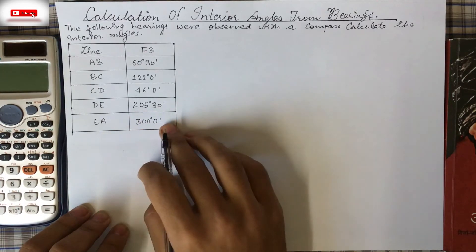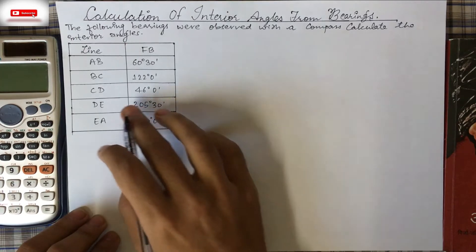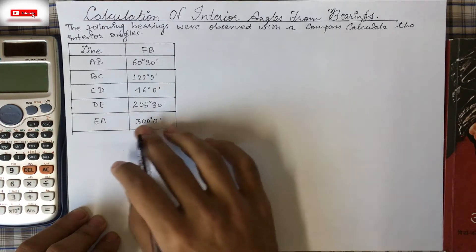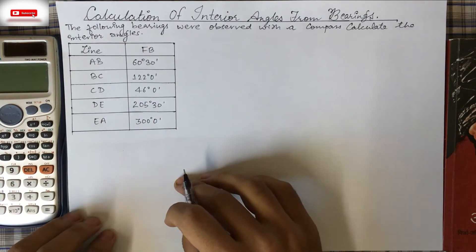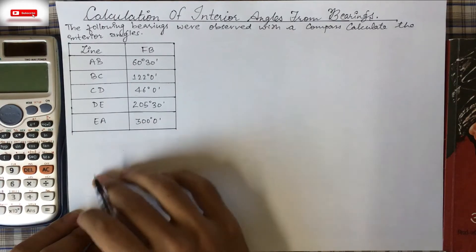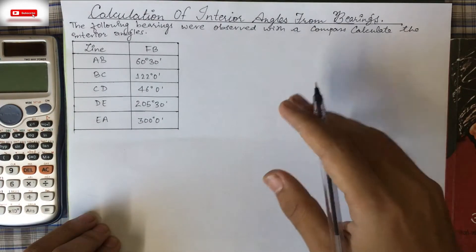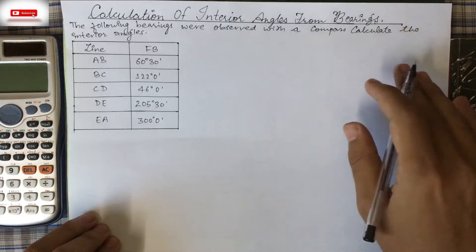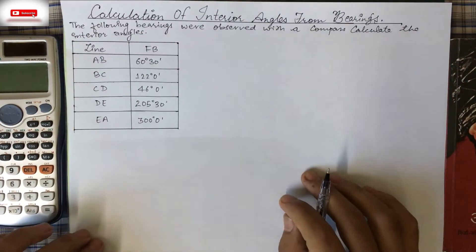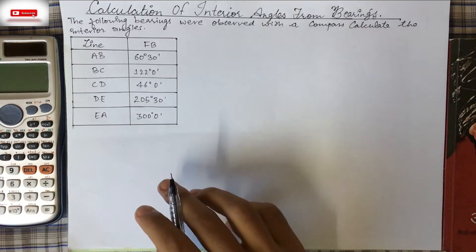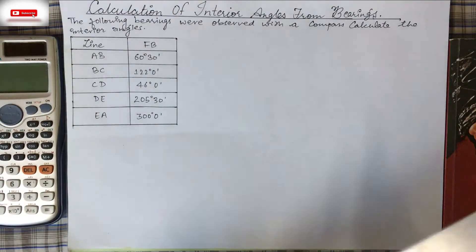The bearing of EA is 300°0'. We can solve this with a simple diagram, or by another method: bearing of previous line minus bearing of next line. Let's first make the figure for the given lines.